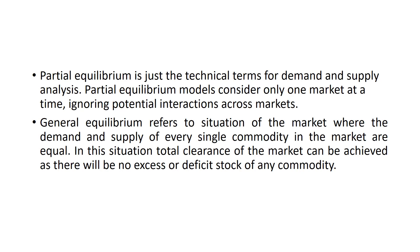General Equilibrium refers to a situation in the market where the demand and supply of every single commodity are equal. In this situation, total clearance of the market can be achieved as there will be no excess or deficit stock of any commodity through General Equilibrium, because as a whole we are looking towards the market and checking that demand and supply of every single commodity are equal.